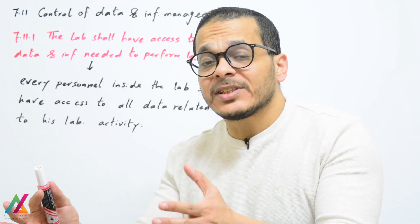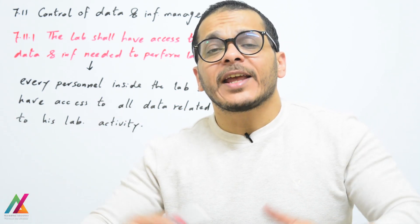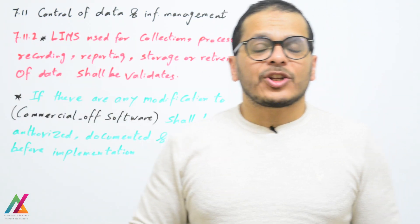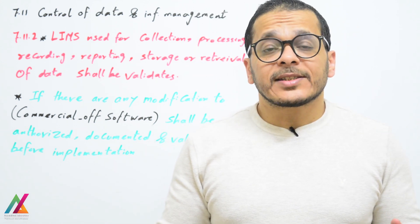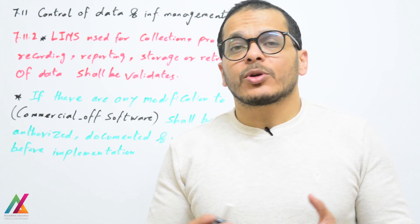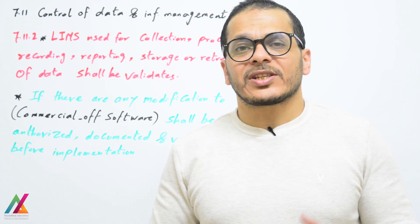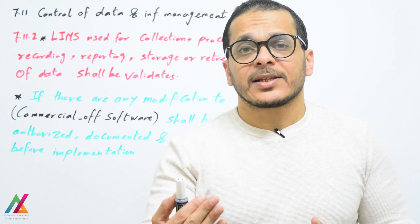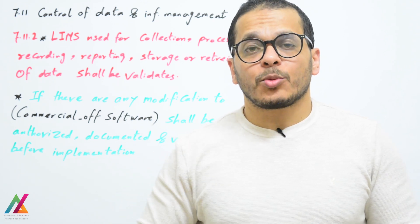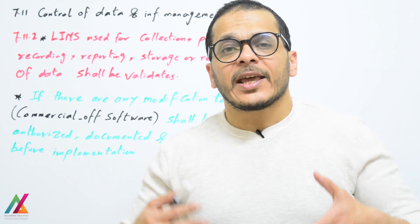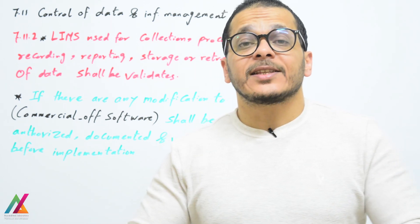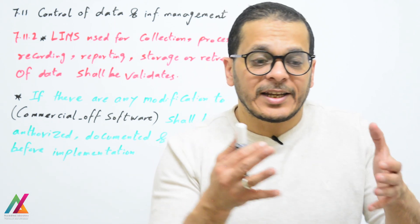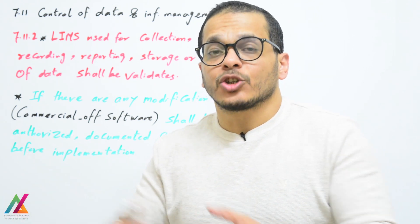LIMS, Lab Information Management System, is an electronic system through which you can do all processes related to your lab activity. You can receive the samples, submit the results up to the final report, and also keep all of your forms and documents inside this system. This is a very important electronic system instead of hardware data.